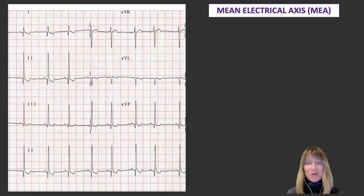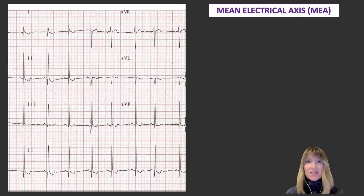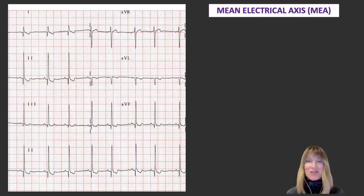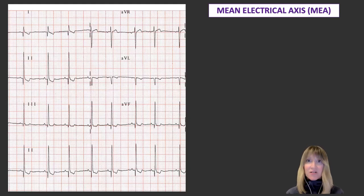Hey everybody, today on QRS-TV I want to tell you about mean electrical axis. The mean electrical axis is a vector that represents the average or main direction of depolarization of electrical activity going through the heart. If we think about the innumerable numbers of vectors representing all the electrical activity traveling through the heart at any given time, if we could sum that up into one single vector telling us magnitude and direction, that's what MEA or mean electrical axis is.